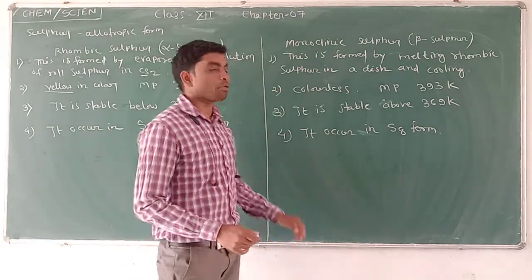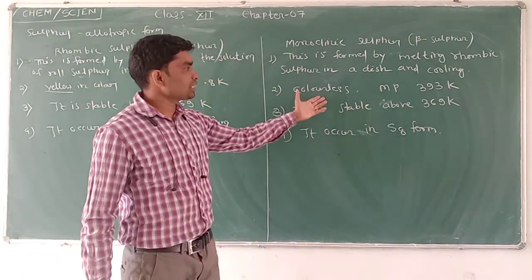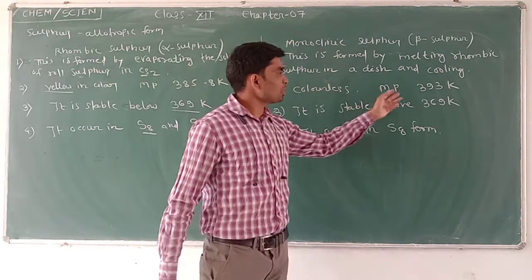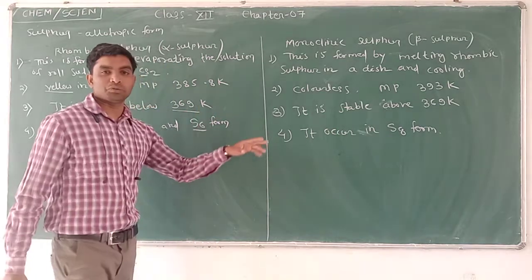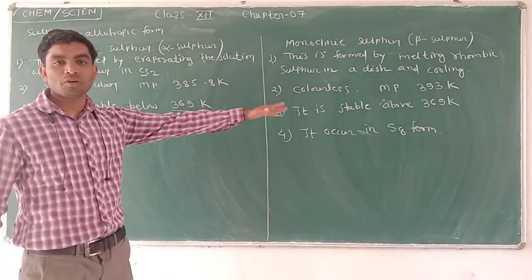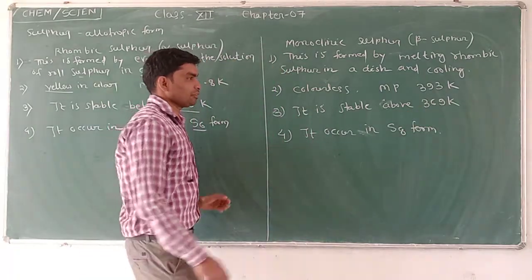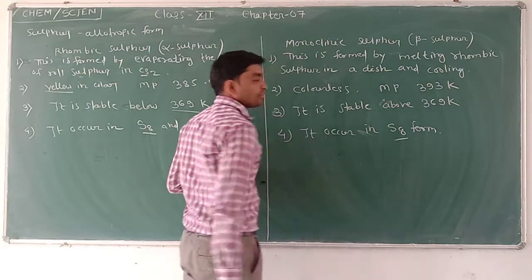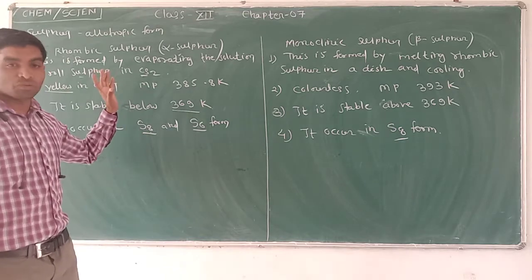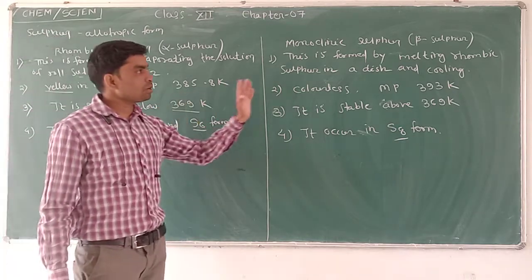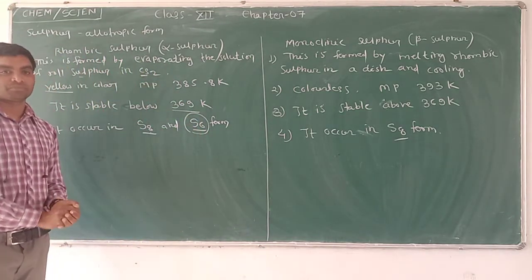It is also yellow in color with melting point of zero, and it is stable above 369 Kelvin. Above 369 Kelvin this form is stable. In this form, S8 ring structure is present, similar to alpha sulphur. Both alpha and beta sulphur have S8 form.